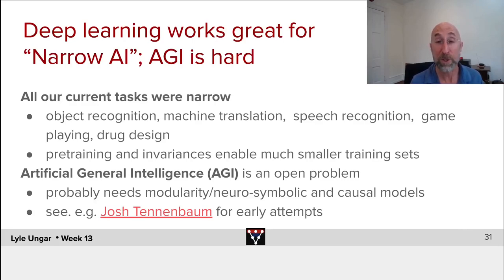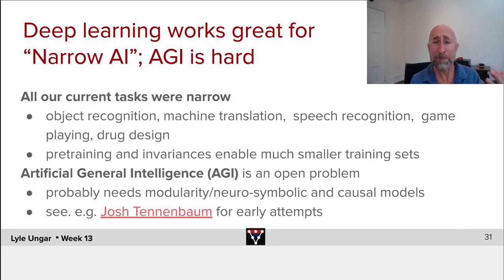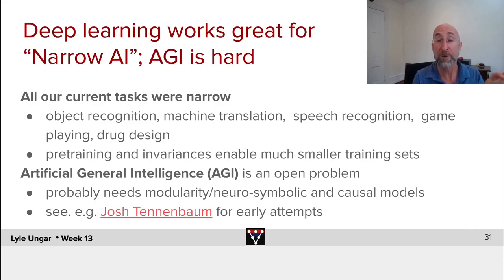That they can understand what's happening in stories and the world, and predict what would have happened if John had walked out from the restaurant without paying — counterfactual questions. And I think those will probably need some form of modularity. Will it be capsules? Will it be RIMs? I don't know. But something like that — something that's probably neurosymbolic, some way of breaking the world into modules that have sparse interactions, something that's going to capture some form of causality.